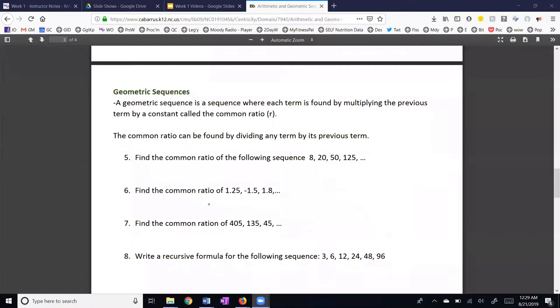Now we move on to the second type of sequence, which is a geometric sequence. And we have a nice situation because with the arithmetic sequence we added a number to get the next number in the sequence. Here, a geometric sequence is a sequence where each term is found by multiplying the previous term by a constant called the common ratio, and we use the letter r.